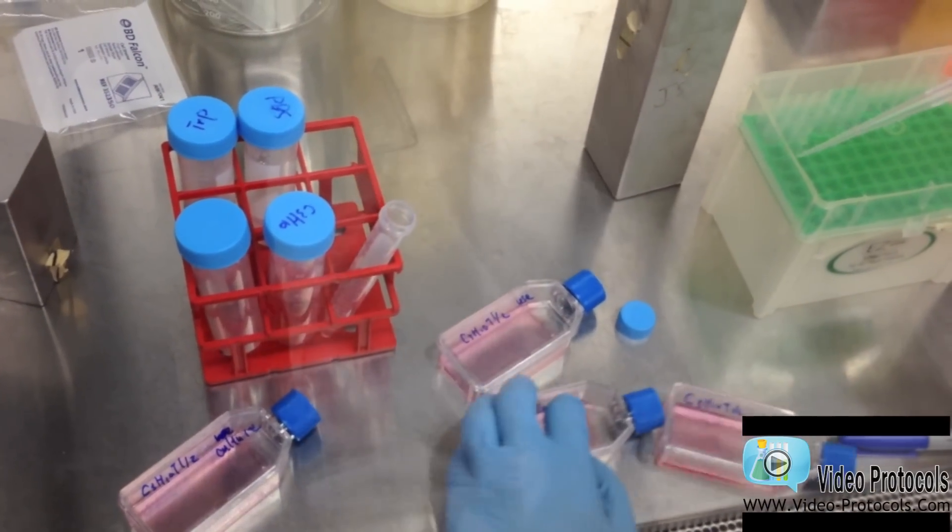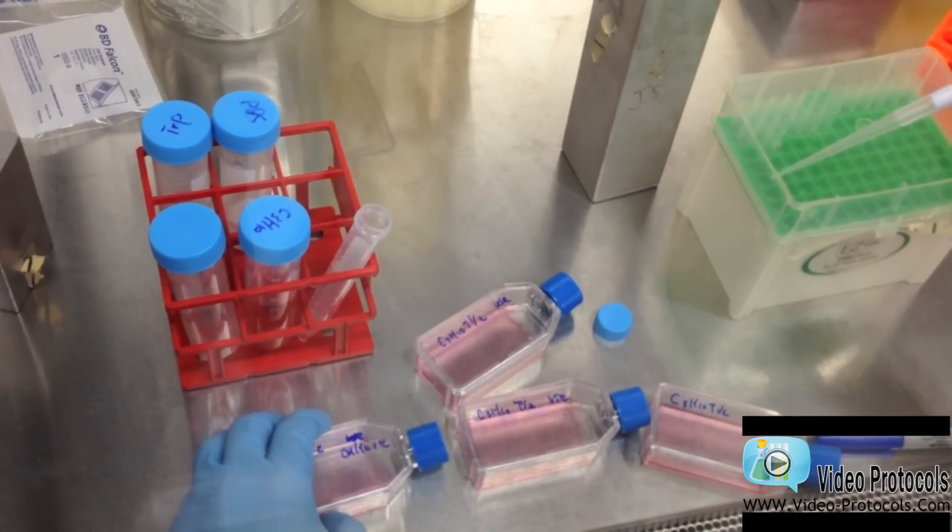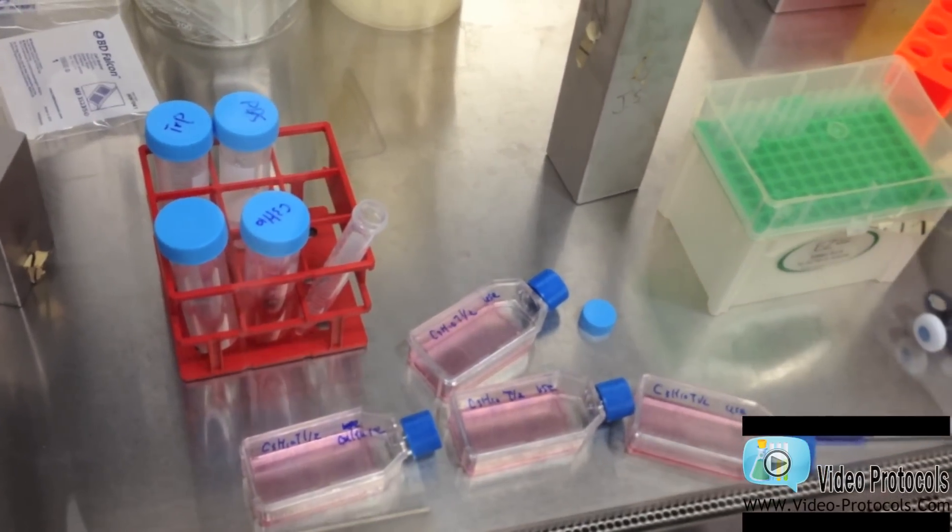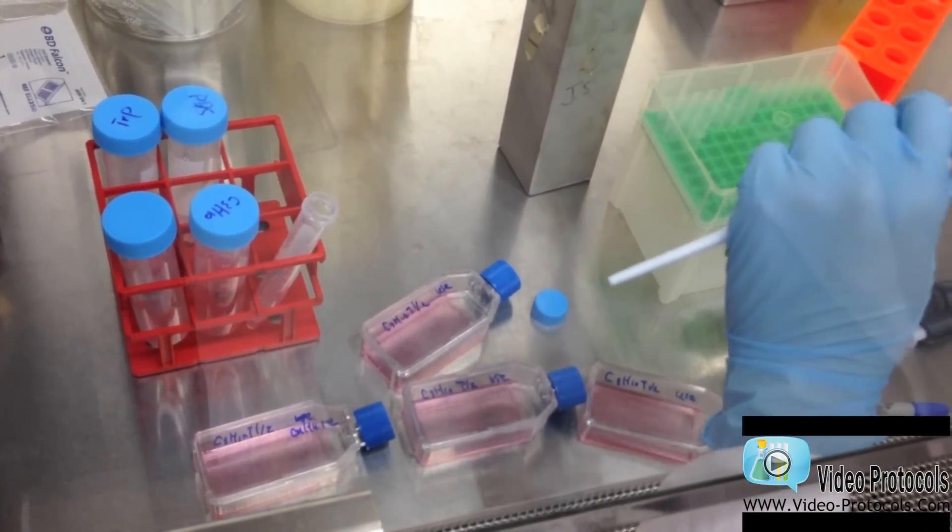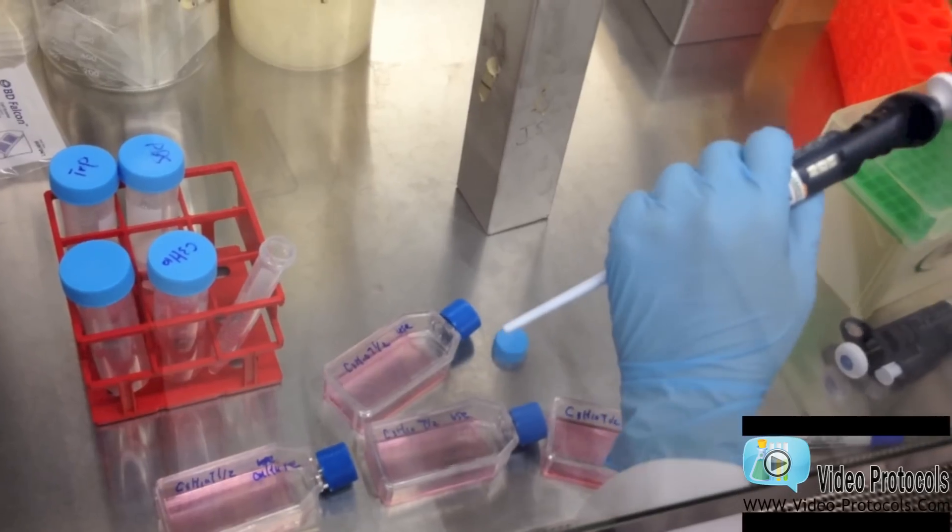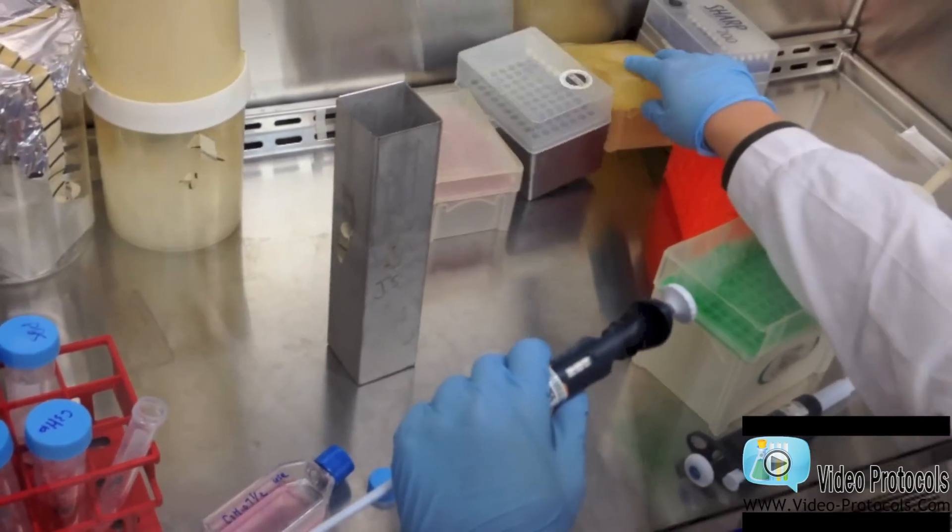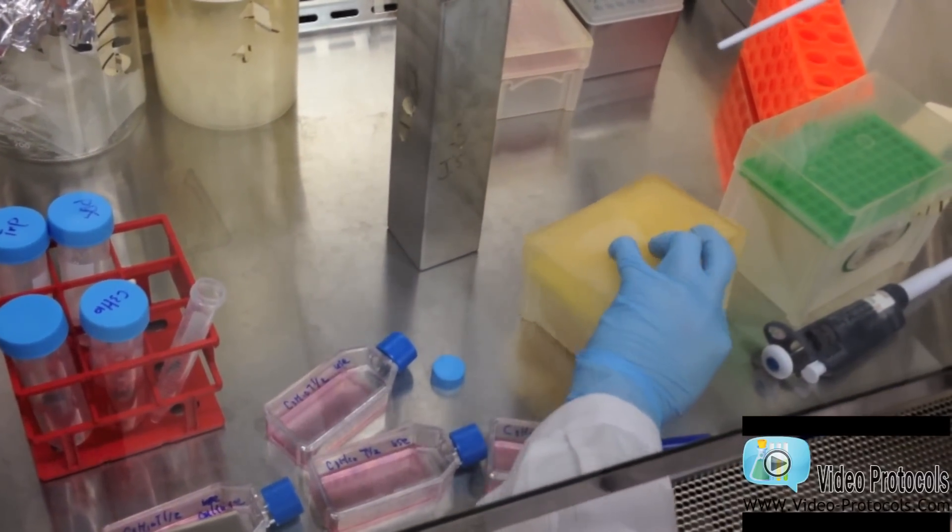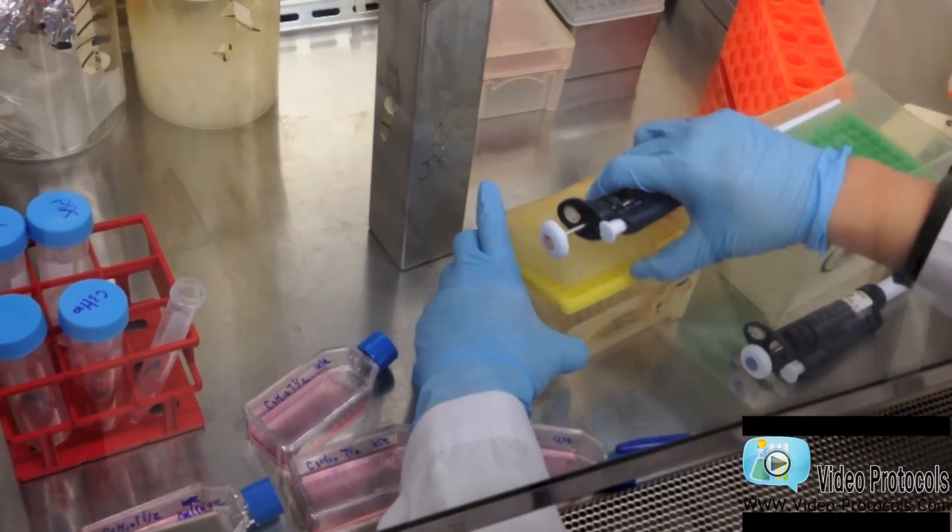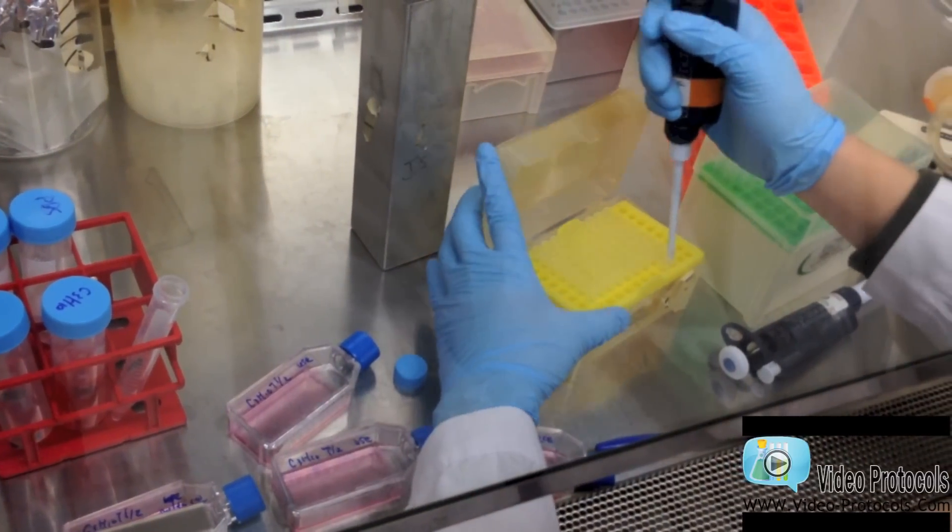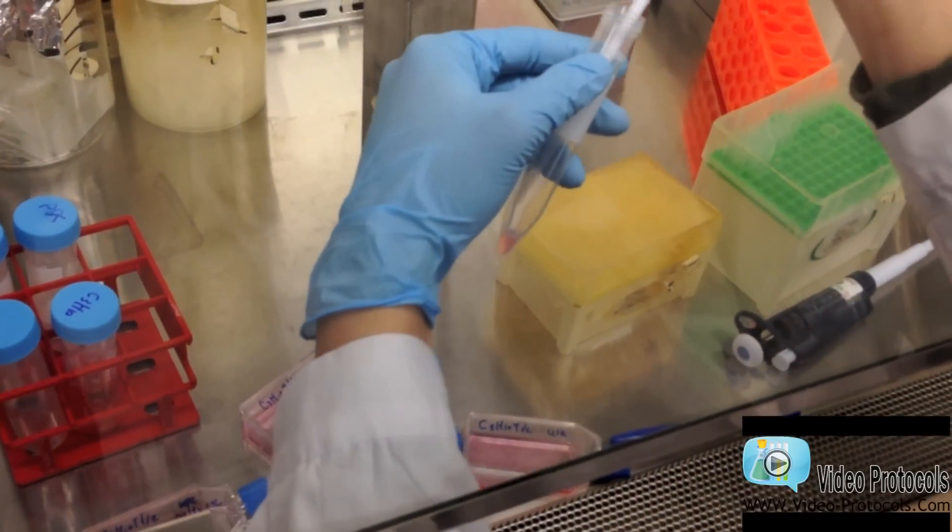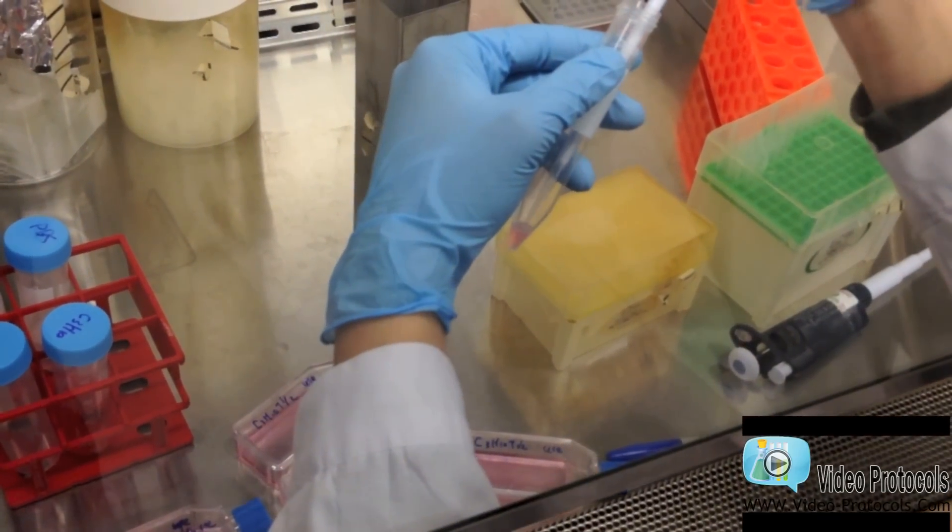And for this flask, I would like to use a more diluted cell density. So I can simply just add less volume.